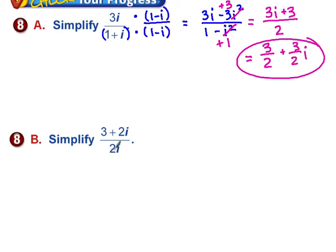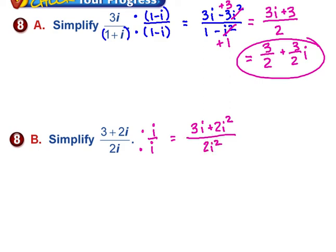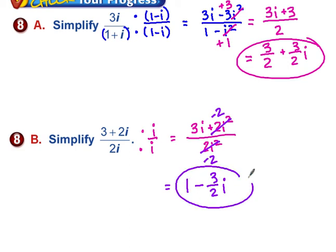In this last example, the denominator has only an imaginary part with no real part, so I don't need the conjugate. I multiply top and bottom by i only — the 2 stays because it's real. On top: 3i plus 2i squared. On the bottom: 2i squared. Replacing i squared with negative 1: the top gives 3i minus 2 and the bottom gives negative 2. Splitting: negative 2 over negative 2 is 1, and 3i over negative 2 is minus 3 halves i. Real part first, imaginary part second.